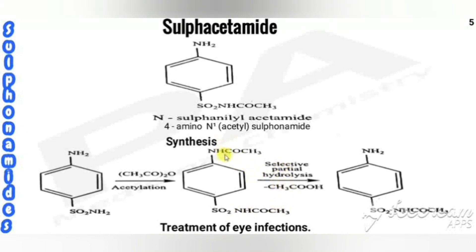On acetylation, both NH2 groups are acetylated, giving NHCOCH3 at both positions. Then selective partial hydrolysis is performed. On hydrolysis, cleavage occurs between nitrogen and carbon at one position: H is added to give NH2, and OH is removed as acetic acid, yielding sulfacetamide. This drug is used in the treatment of eye infections.